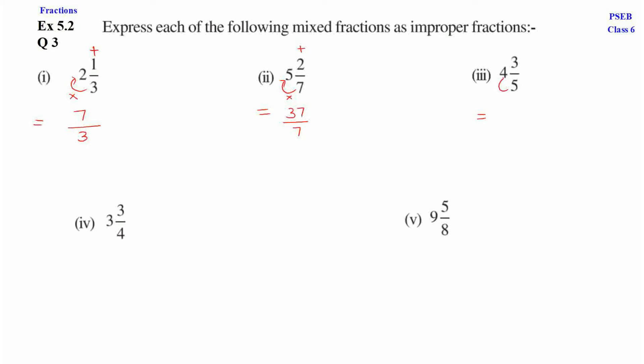Third part. 5 into 4 plus 3. So, 5 into 4 plus 3 is 23. This is the numerator. Upon denominator, it will be same as 5. So, 23 upon 5.